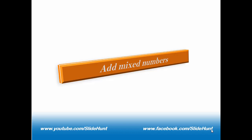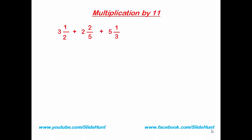In this tutorial I'm going to teach you how to add mixed numbers. So let's get started. Here we add these numbers: 3 and 1/2 plus 2 and 2/5 plus 5 and 1/3. We can solve this problem in two ways. The first is the conventional method, where we convert the mixed numbers into pure fractional numbers and then add them. But our main purpose is to save time, so we use the shortcut method.